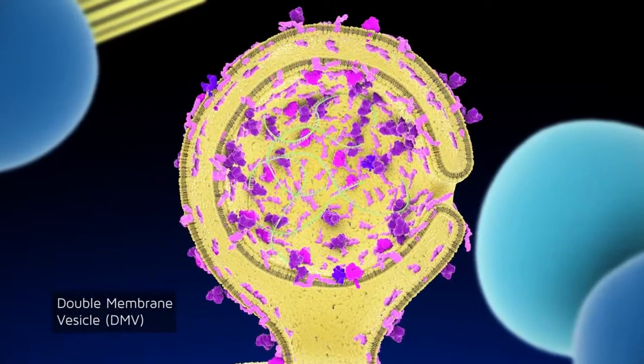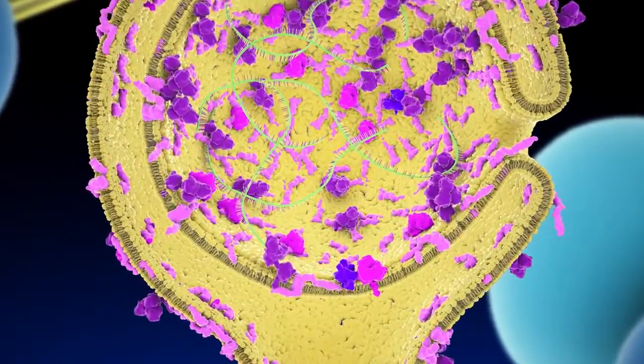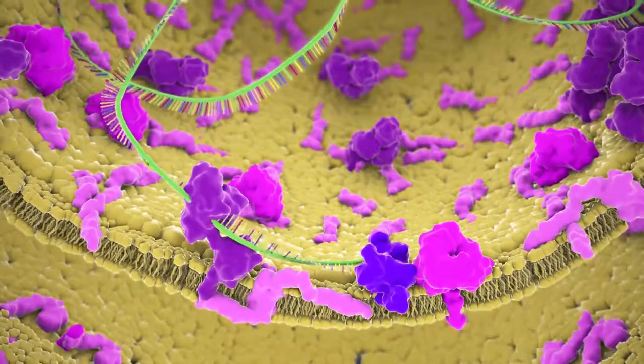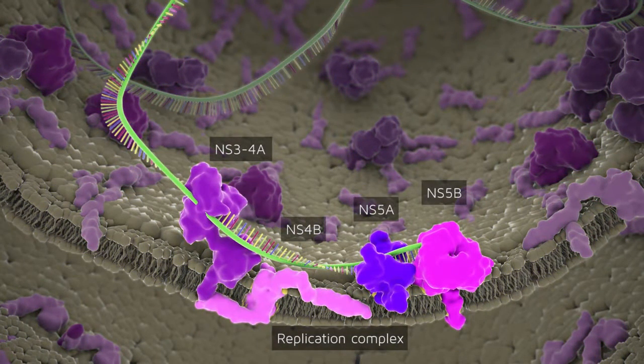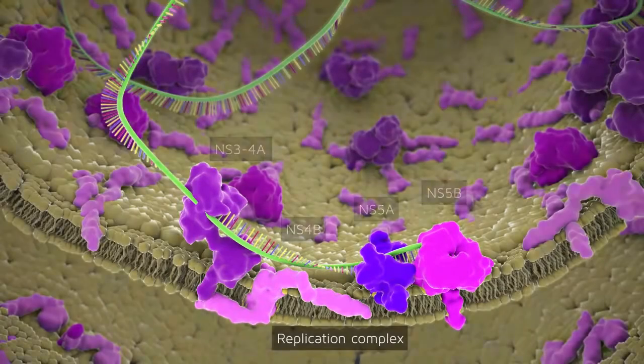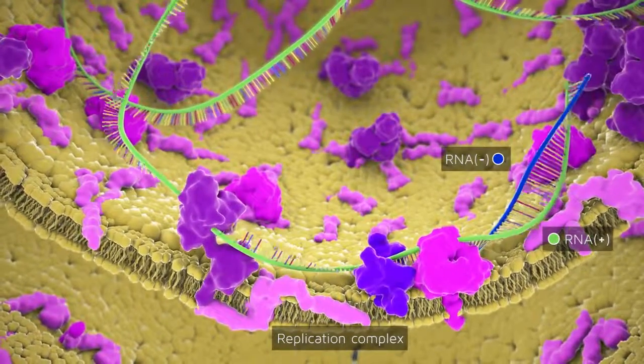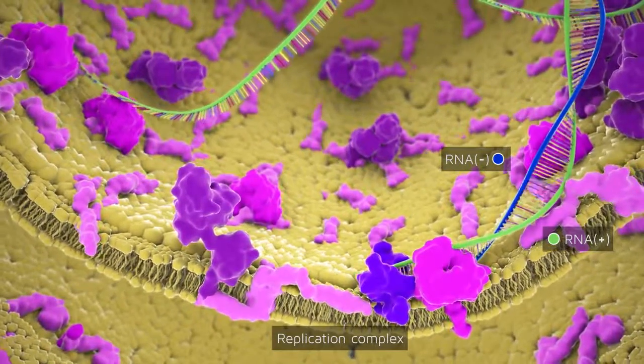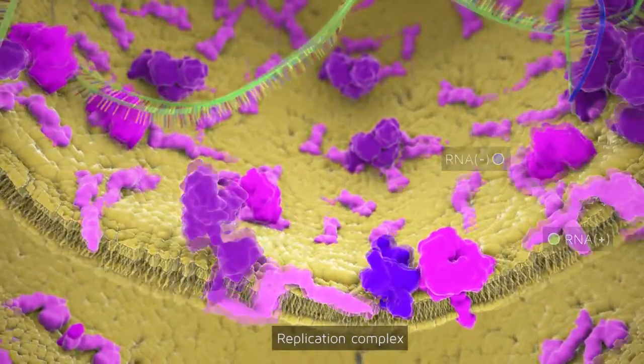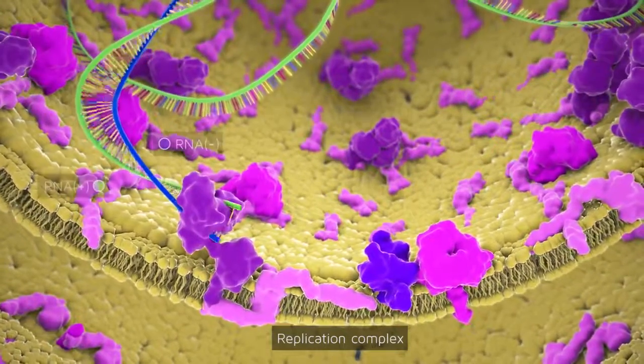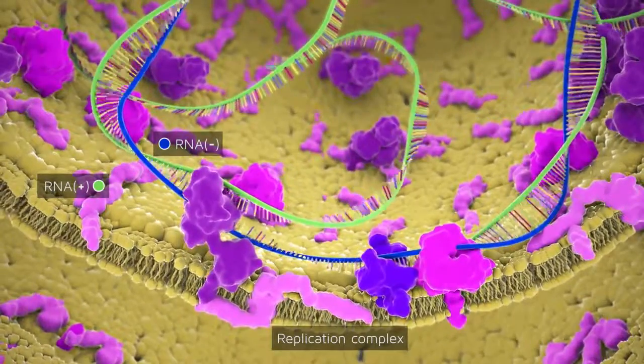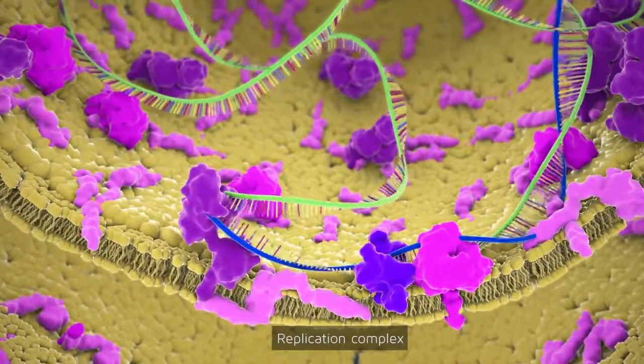Viral RNA synthesis is catalyzed by the RNA-dependent RNA polymerase activity of NS5B, which acts in concert with other viral nonstructural proteins as well as several host factors. After synthesis of a negative strand RNA intermediate, multiple positive strand progeny RNAs are generated from this template.